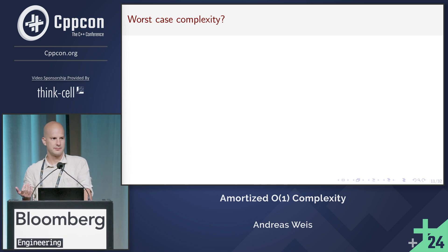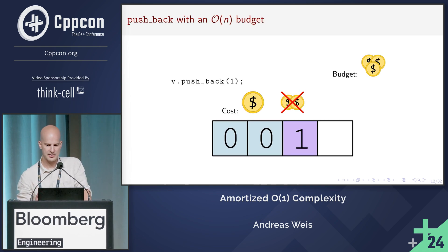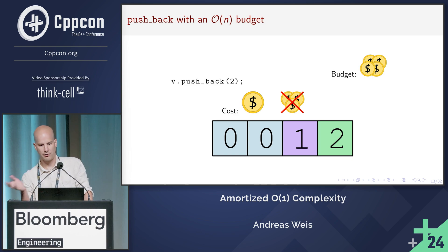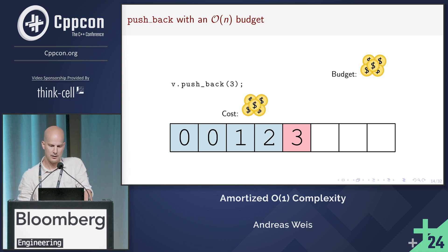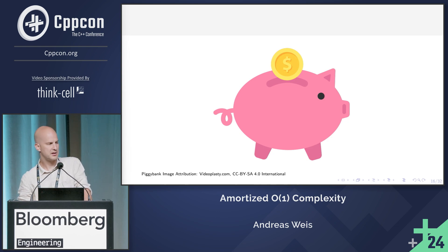So what's the worst-case complexity of this? It's linear — linear in the number of elements in the vector. What that means is: for the first element we have a budget of three coins, we pay one coin for the copy and throw the other two away. For the second element we have a budget of four coins, pay one coin and throw the others away. For the third element we have a budget of five coins, and we need all of those coins to make the copy. That's a lot of wasted coins.